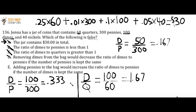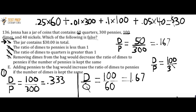E says: adding pennies to the bag would increase the ratio of dimes to pennies if the number of dimes is kept the same. We keep the dimes at 100 but increase the pennies. The original ratio was 0.333 with 300 pennies. If we increase pennies to, say, 350, then 100 divided by 350 gives approximately 0.286, which is smaller than 0.333. So E is actually a false statement, which means this is the right answer.